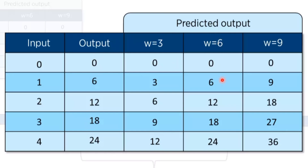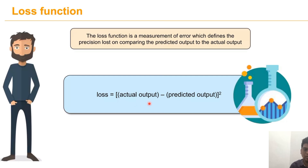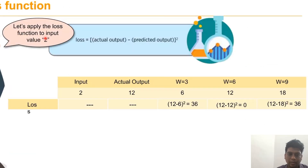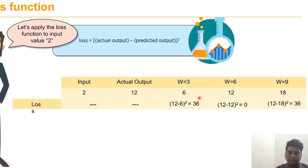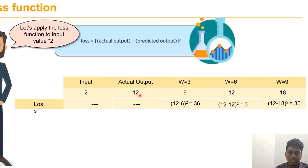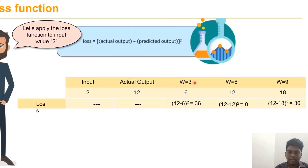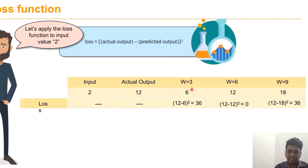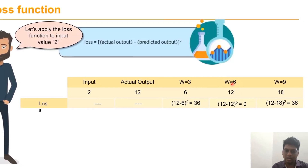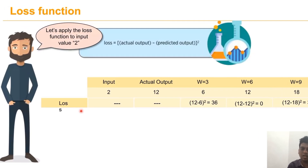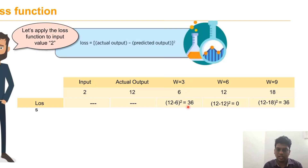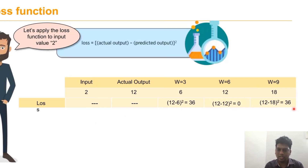But from a machine's point of view, how does it identify the correct weight? We calculate the loss as (actual value − predicted value)². Taking input 2, the actual output is 12. When w = 3 the predicted output is 6, giving a loss of (12−6)² = 36. When w = 6 the predicted output is 12, giving a loss of 0. When w = 9 the predicted output is 18, giving a loss of 36.